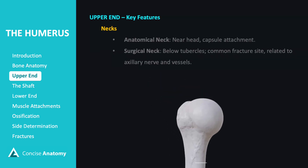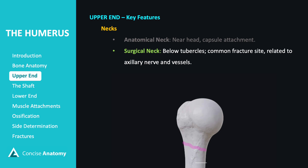The humerus has two types of necks. The anatomical neck is located just below the head of the humerus and serves as the attachment site for the joint capsule. The surgical neck is situated below the greater and lesser tubercles. It is a common fracture site, and injuries here may impact the nearby axillary nerve.